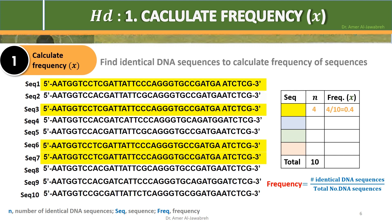Sequences 2, 5, and 8 are identical, with an X of 0.3. Sequences 4 and 9 are identical, with an X of 0.2.